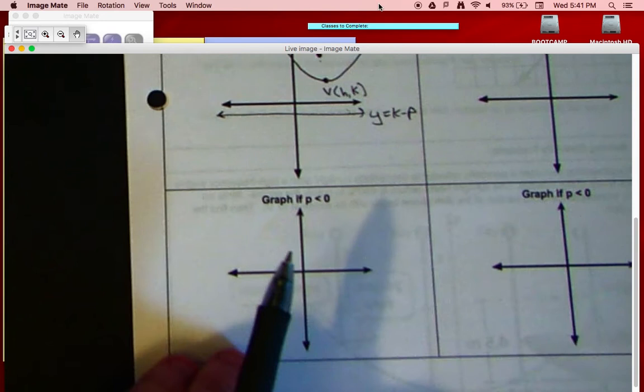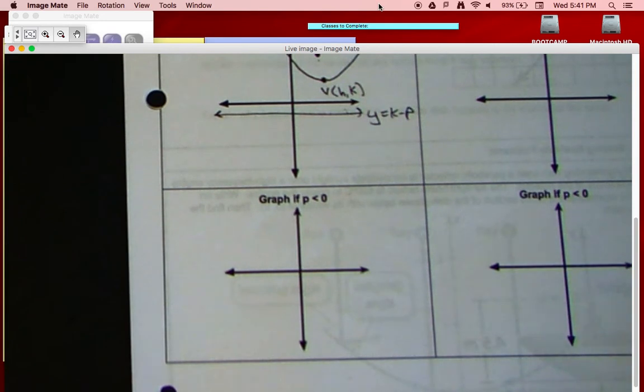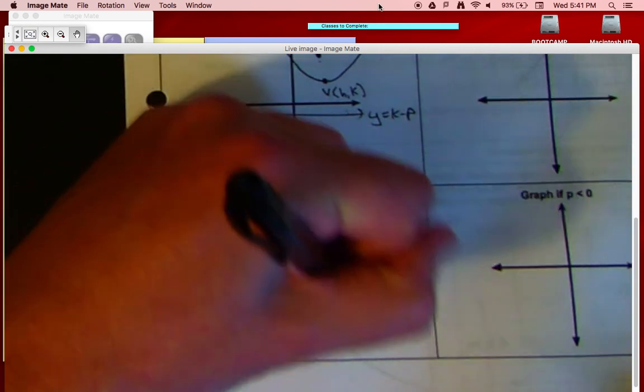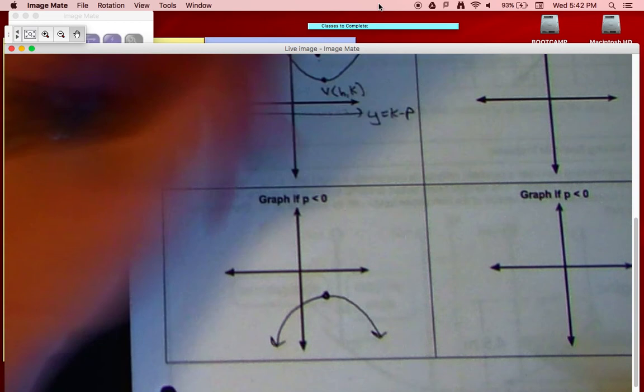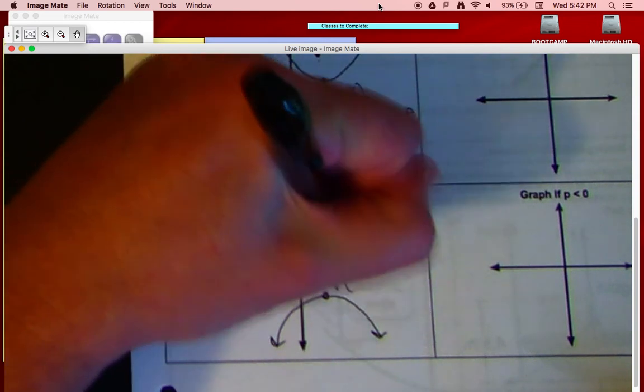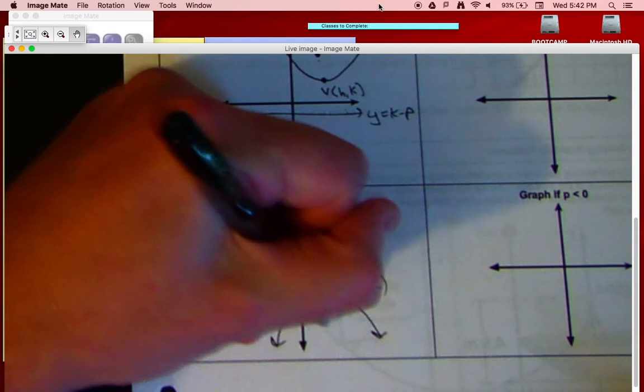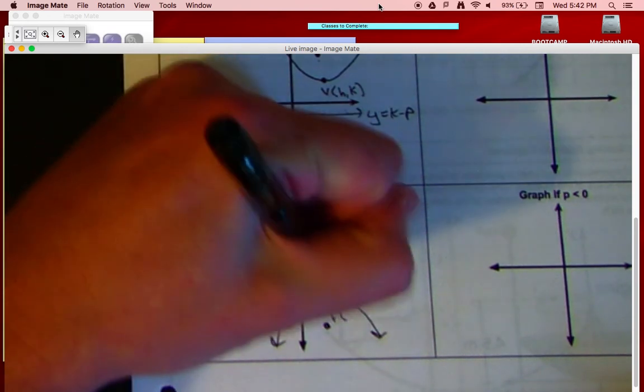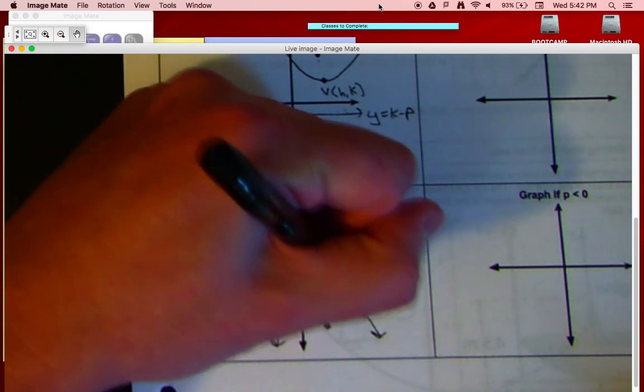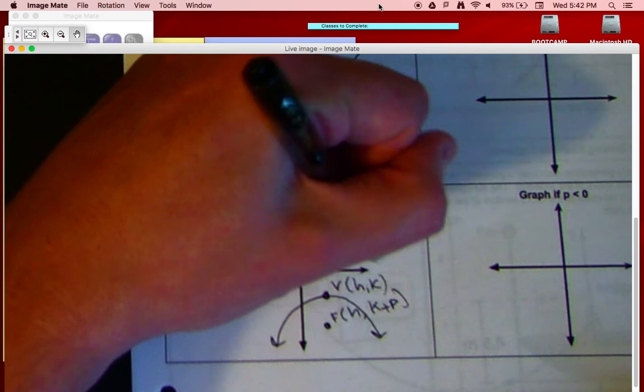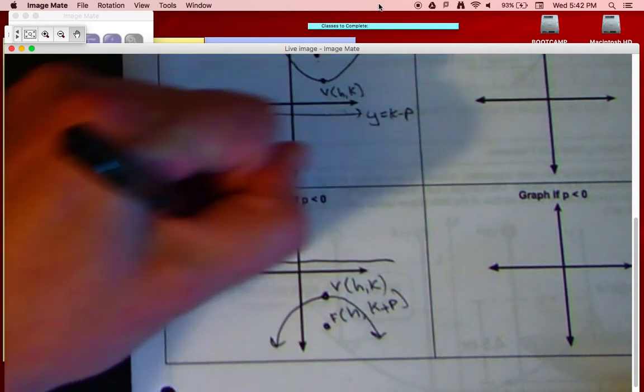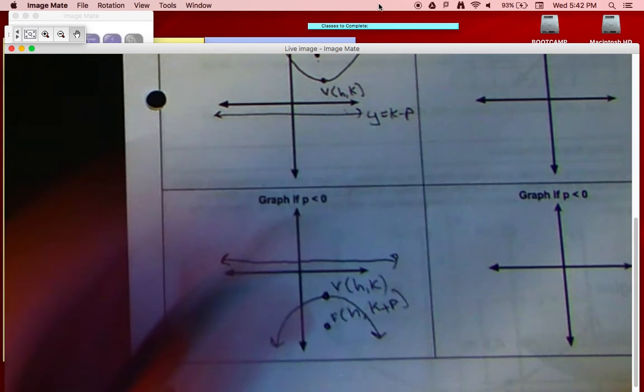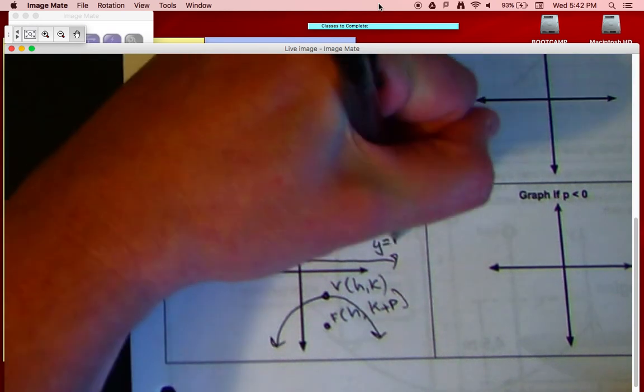Alright, so what's it look like if p is less than zero? If p is less than zero, we know it's going to go downward like that, and so we've got our vertex is at h, k, and we've got our focus inside, and that's going to be h, and then comma k plus p. Those are our coordinates. Our directrix comes up along there, now you can see it, and it has a general form of the equation of k minus p.